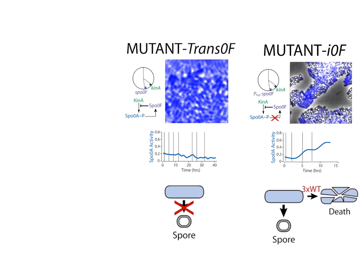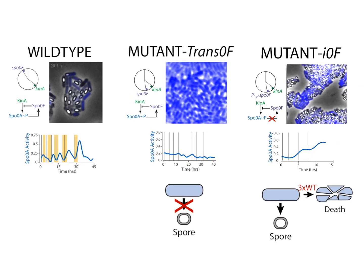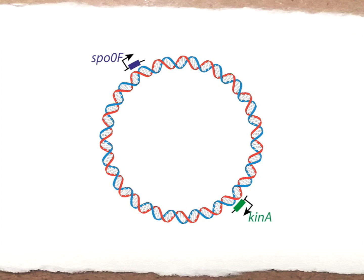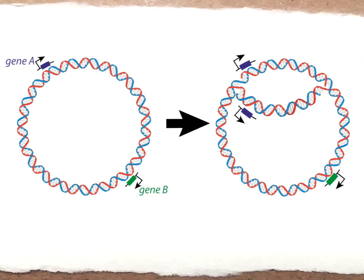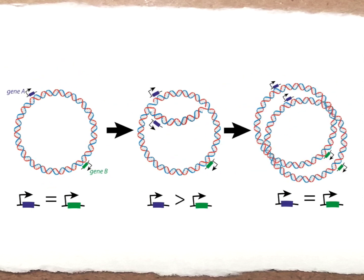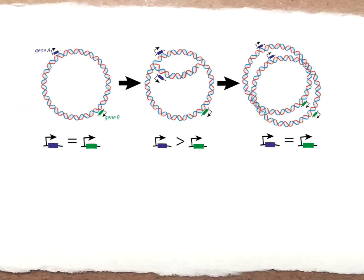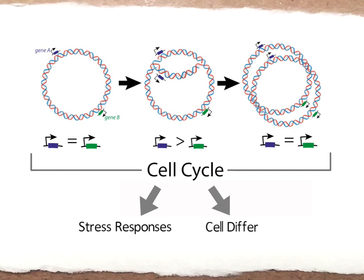This observation proves physiological importance of the discovered coordination of sporulation process with DNA replication. The mechanism of sensing the completion of DNA replication that we have uncovered relies on a very basic and universal feature of bacterial physiology. In all bacteria, replication leads to transient imbalance between genes near the origin and genes near the terminus. We therefore believe that similar mechanisms are in place in other bacteria to coordinate their cell cycle with stress responses, differentiation and other processes.